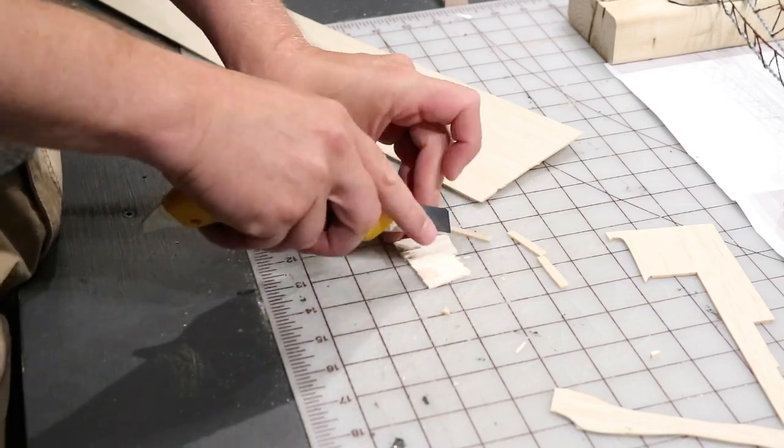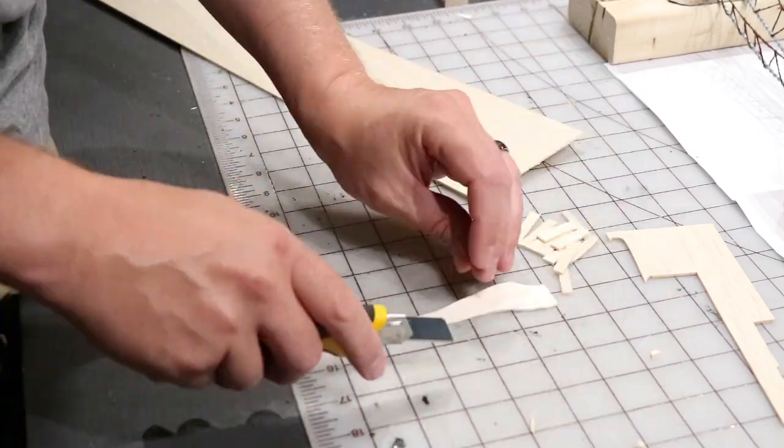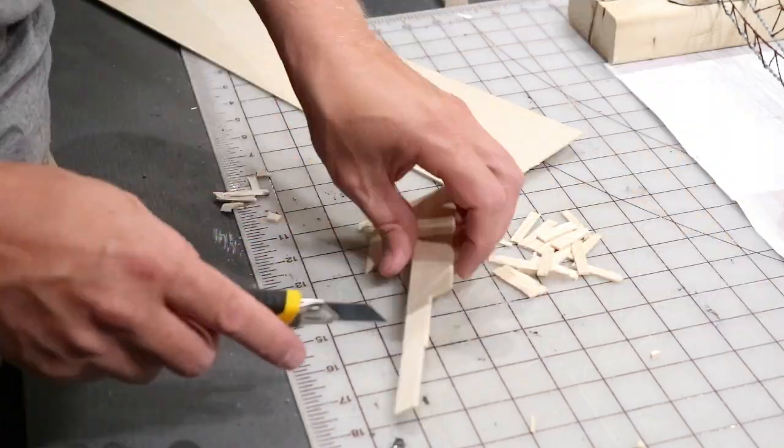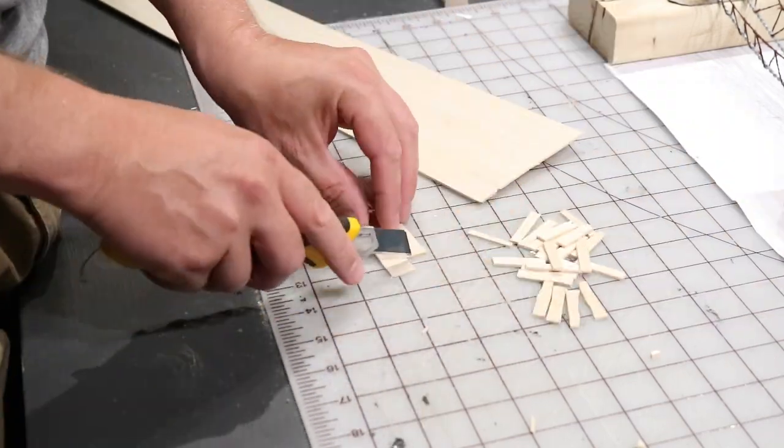Once that dries, you can start gluing on the planking. I'm just using balsa wood sheets and just kind of cutting it into the right size planking that I'm going to need for the bridge.